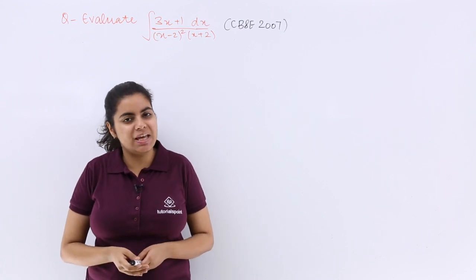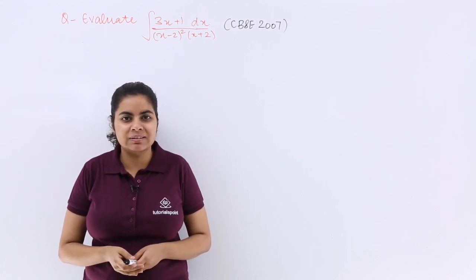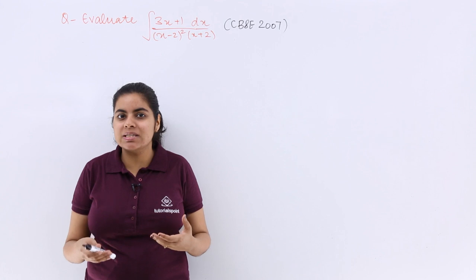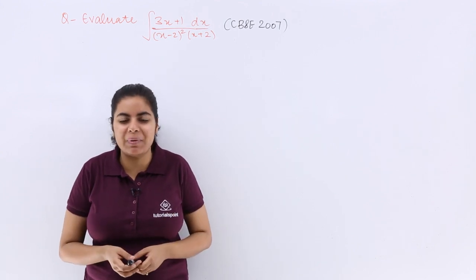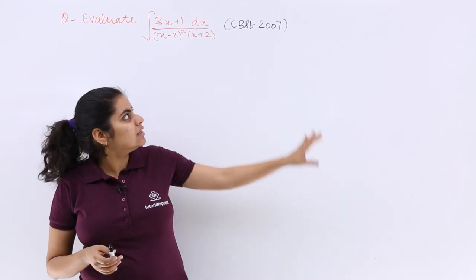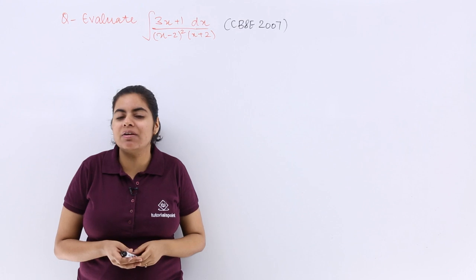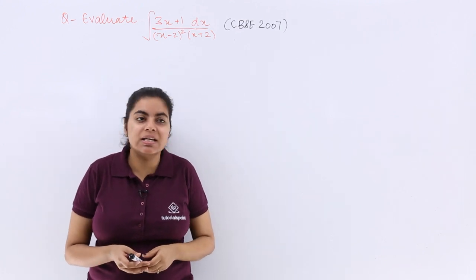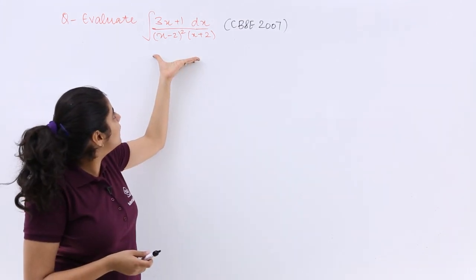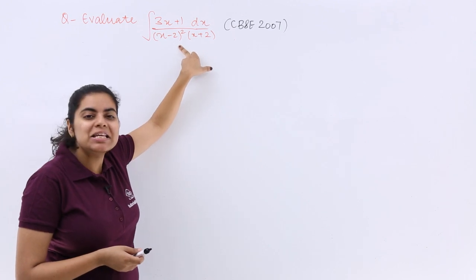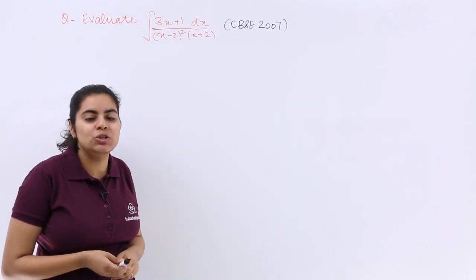Let's start with this question based on partial integration and integration by partial fractions. It was asked in the CBSE 2007 paper, and the question is: evaluate the integral of 3x plus 1 upon (x minus 2) whole square (x plus 2).